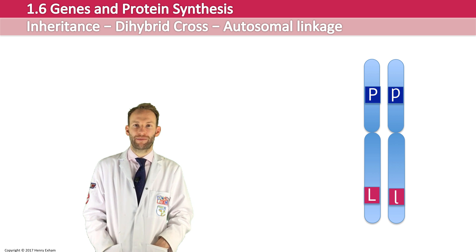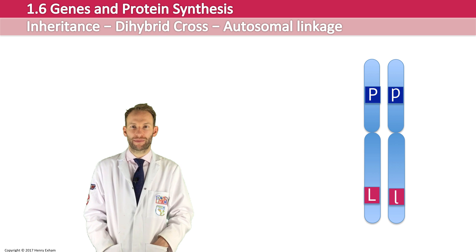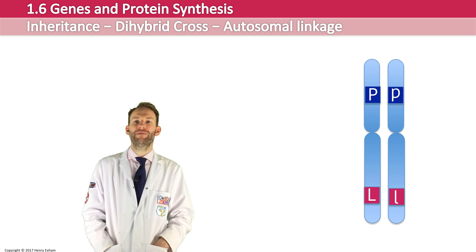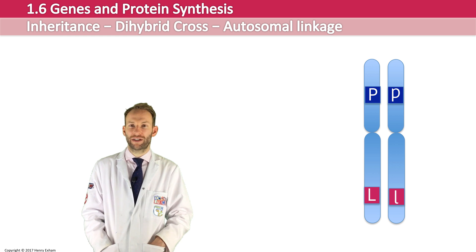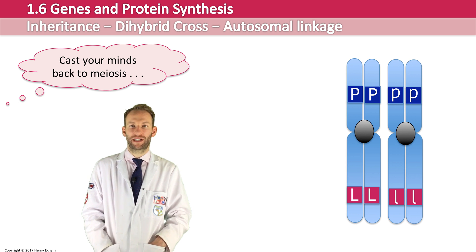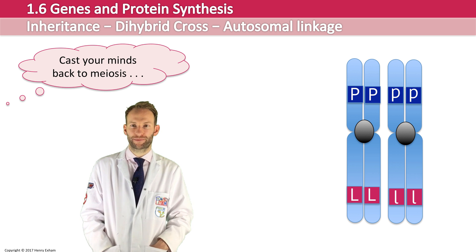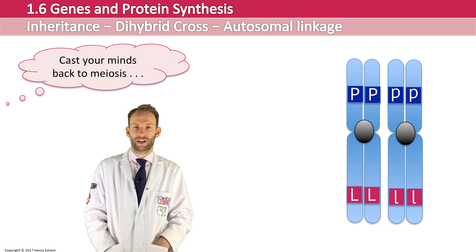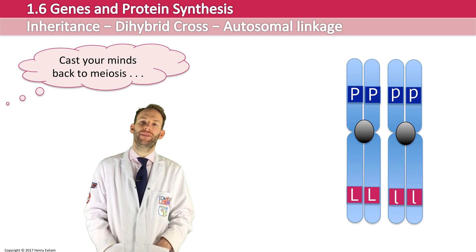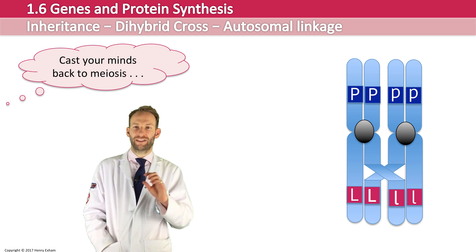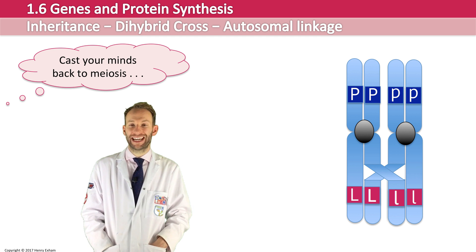Going back to a diploid cell with 23 homologous pairs — before cell division, each chromosome replicates in DNA replication to become sister chromatids joined by centromeres. Then in prophase 1, a process called crossing over occurs. Bits of homologous chromosomes that are equivalent can swap over — they break off and rejoin to form new recombinations.